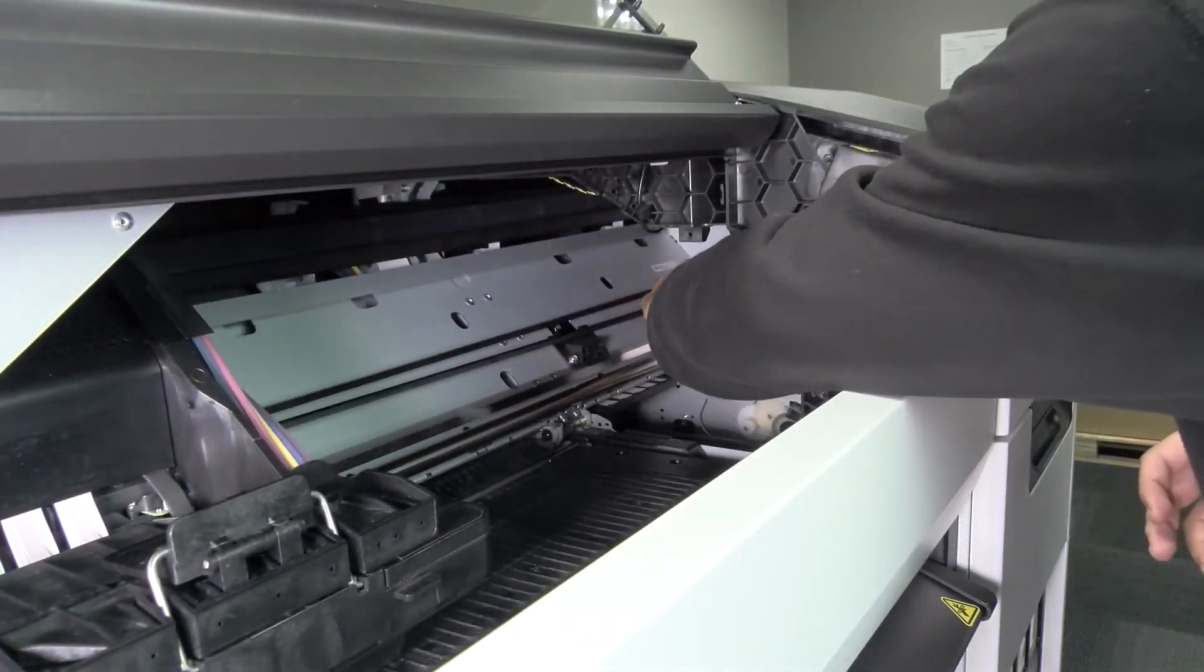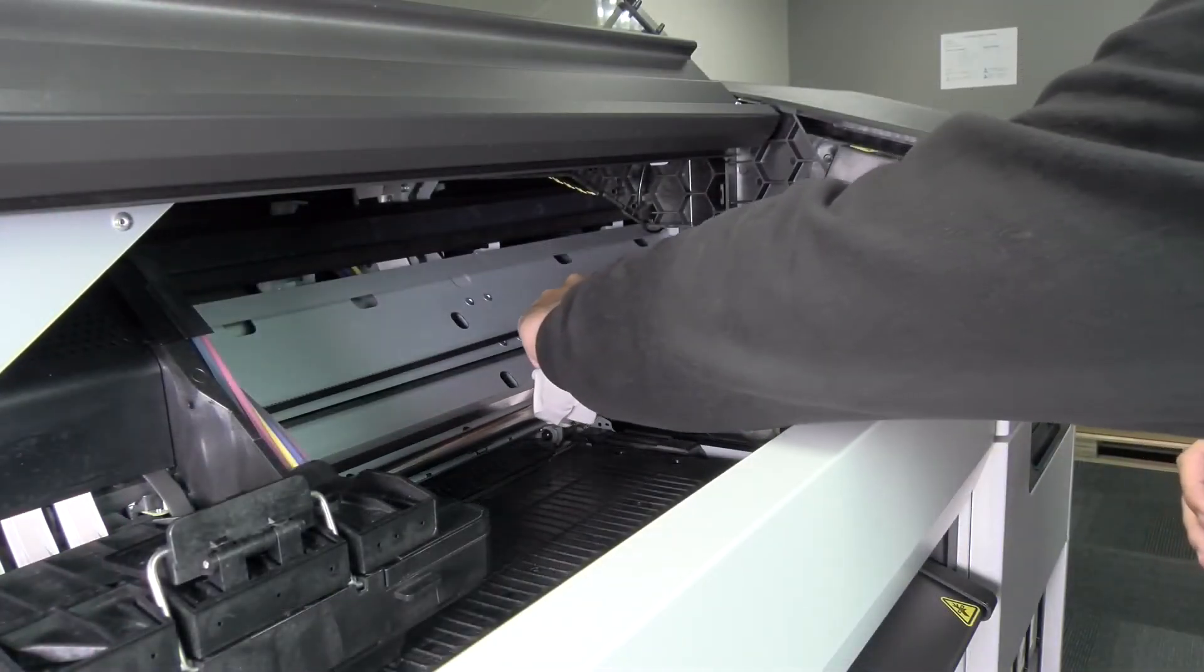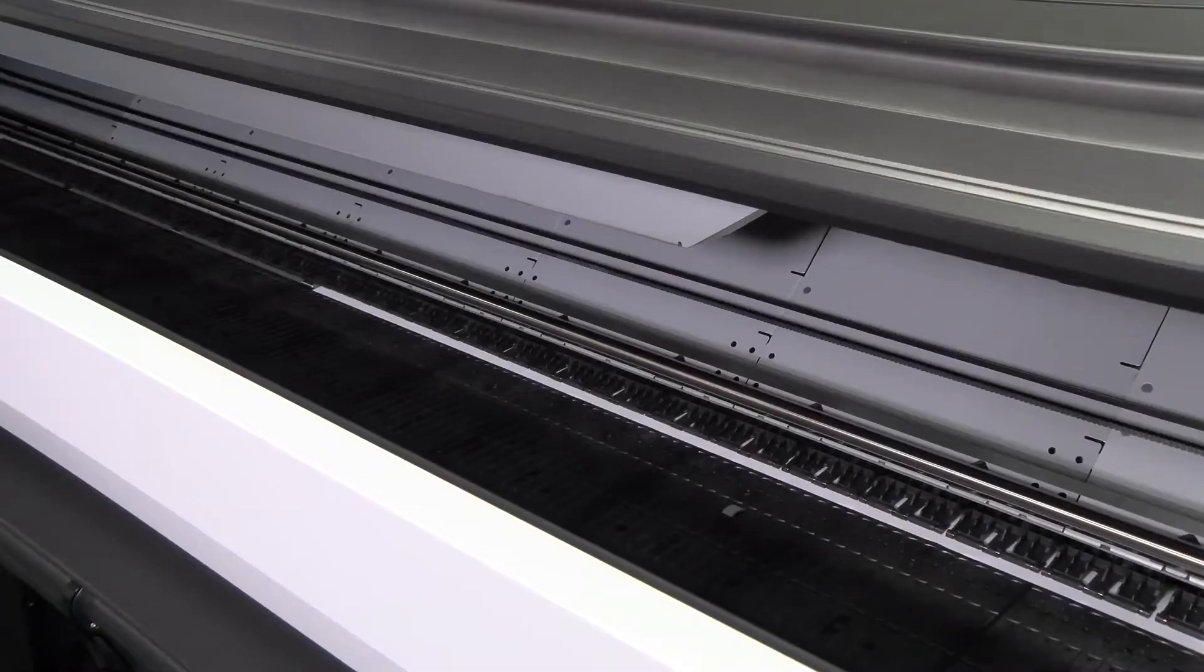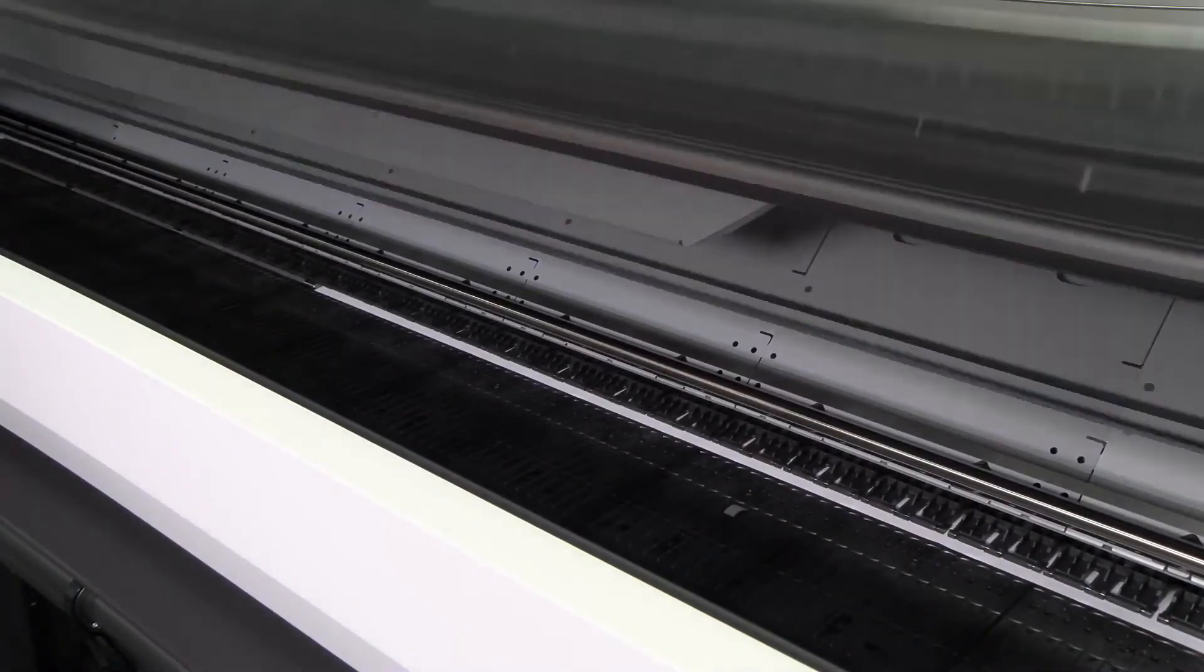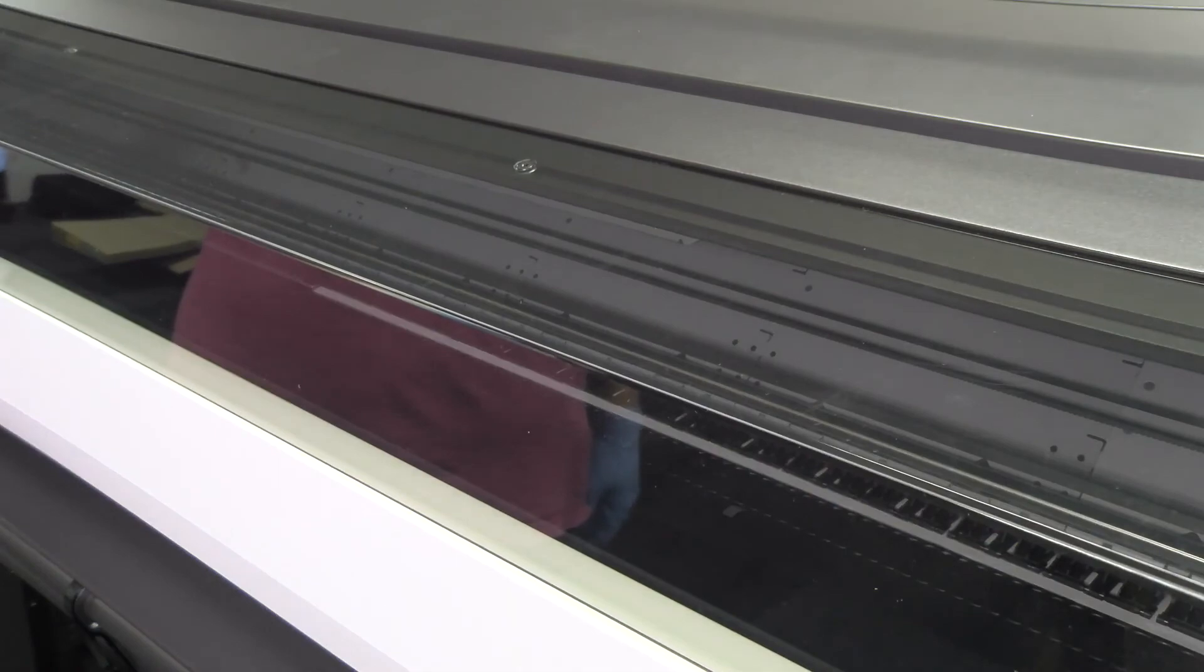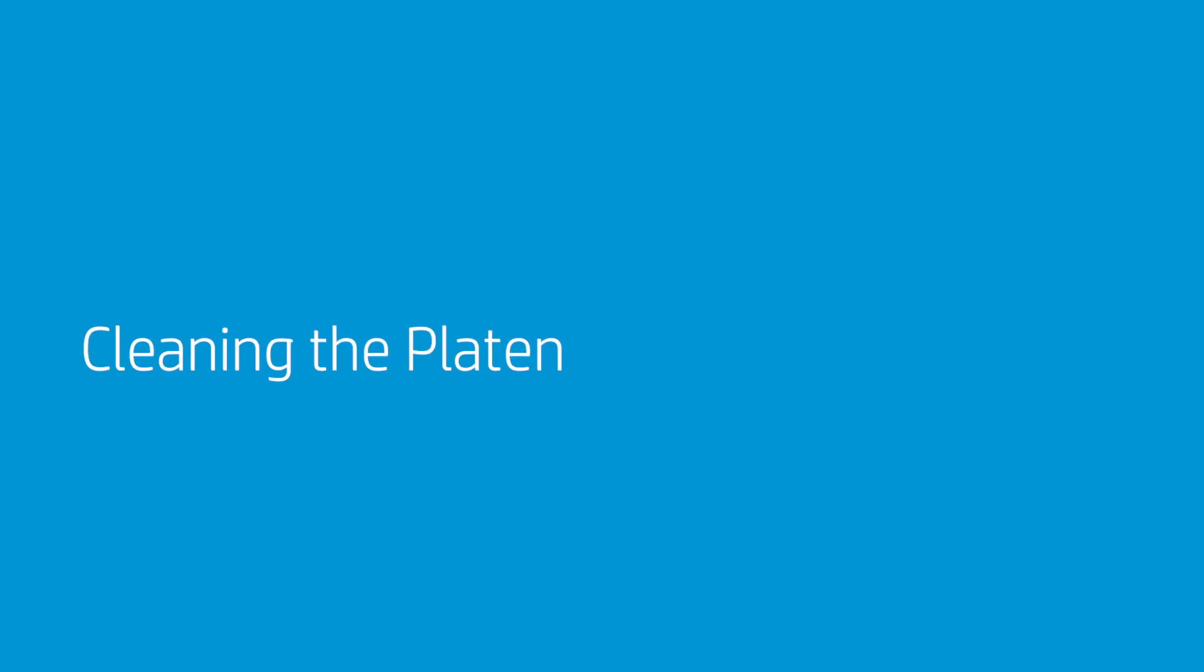The front panel will prompt you to open the cover again and clean the right side of the encoder strip inside the service station. Tap continue when you are finished. Close the front cover again. The carriage will return to its ready position in the service station.